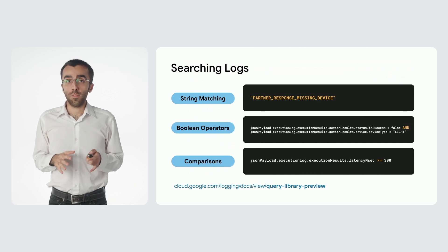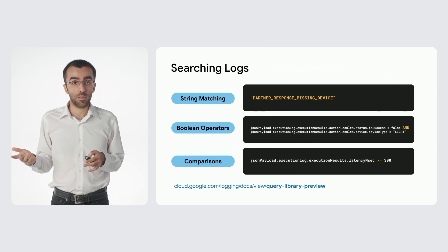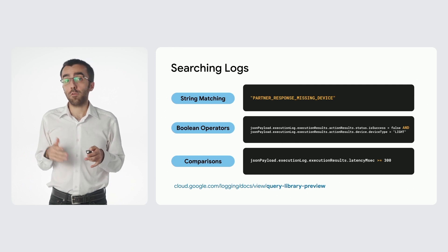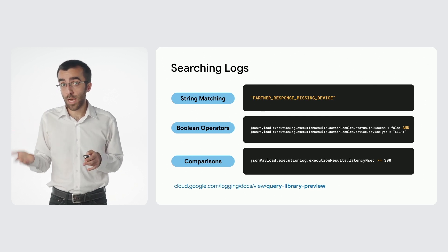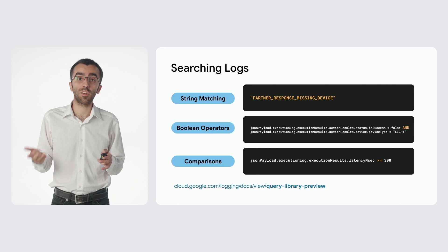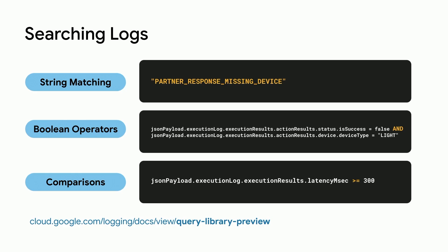You saw an example of conducting a string match as a filter. Similarly, we can also fetch certain fields within the log — like isSuccess equals false and device type equals light — which will give us the error codes coming from light devices. We can combine these with Boolean operators such as and, or, not, and numeric fields. For example, latency milliseconds greater than 300 will get you the logs that have higher latency numbers.